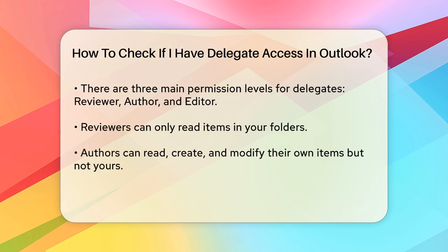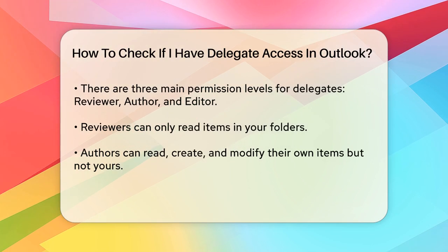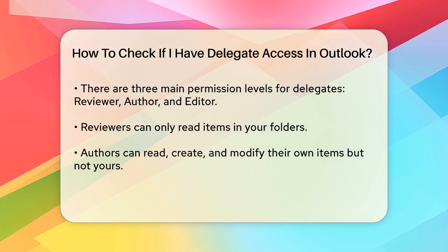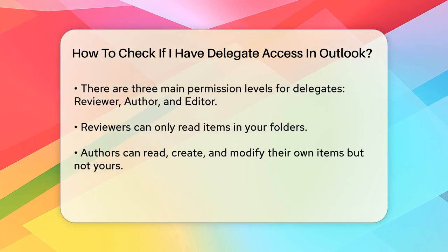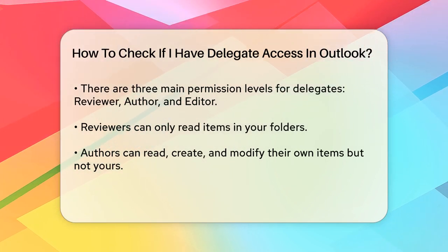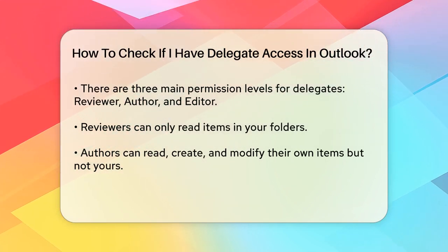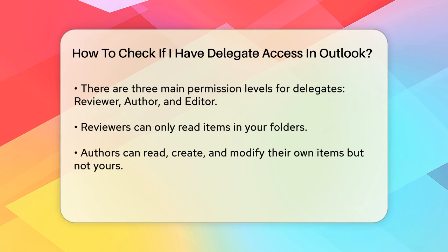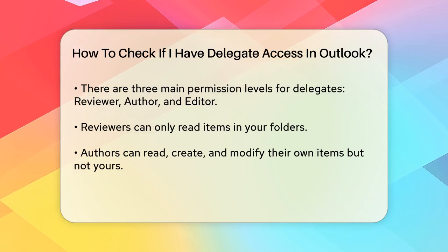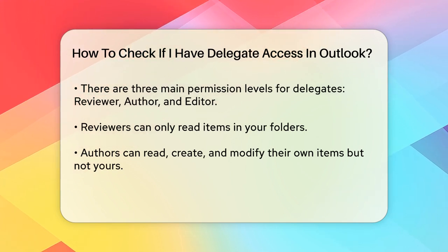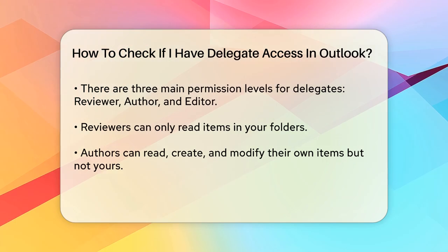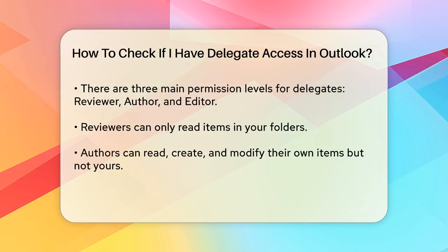This will open a dialog box where you can see if anyone has been granted delegate access to your account. In this dialog box, you'll see a list of people who have been given permissions to manage your mail and calendar. If there are names listed here, it means those individuals have some level of access to your Outlook account.